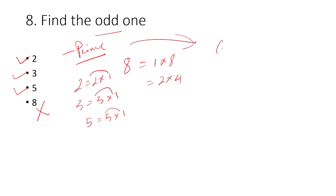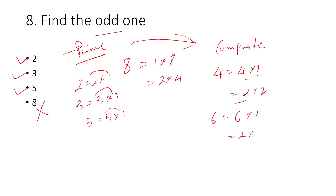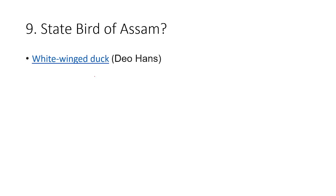The prime number-related concept here is the composite number. A composite number means it has more than two factors. So we have seen the number 2 that has the prime number. The answer is set. Okay, next question.